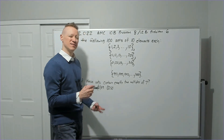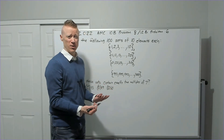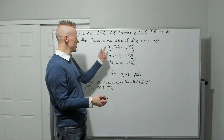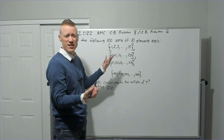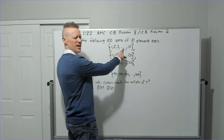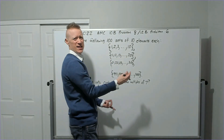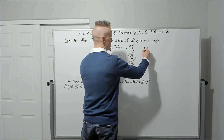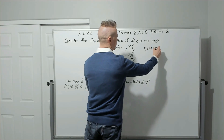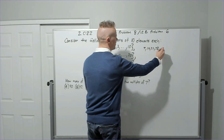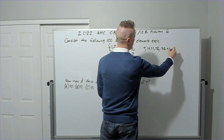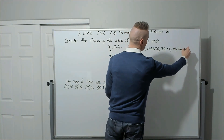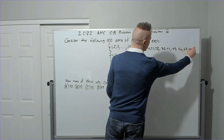Let's get a feel for the problem. Take the first set and see what happens — it's going to have 7 but that's it, since 14 is the next multiple. Let's write some out: 7, 14, 21, 28, 35, 42, 49, 56, 63, 70.